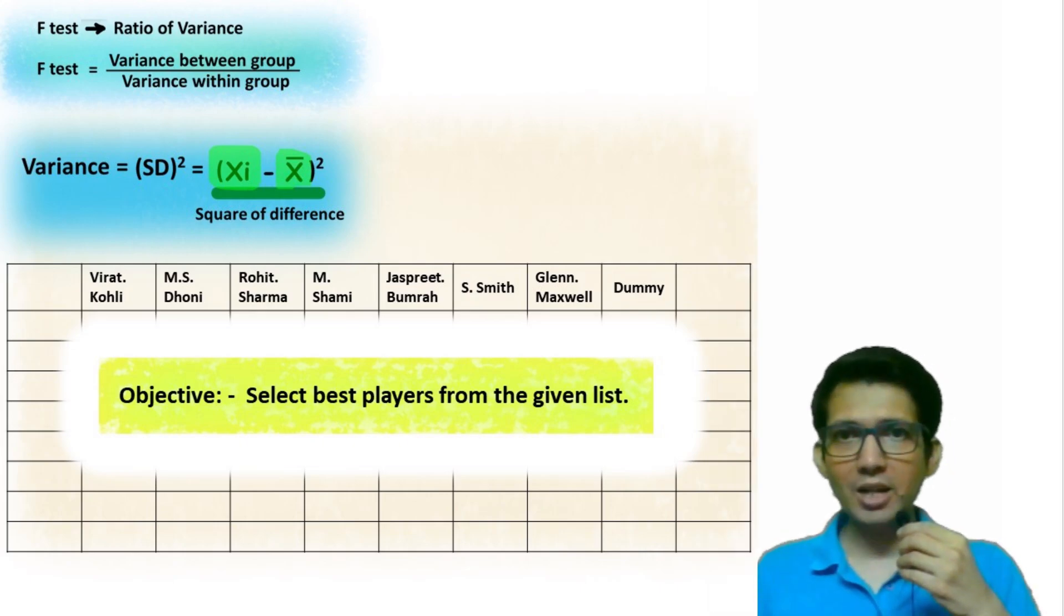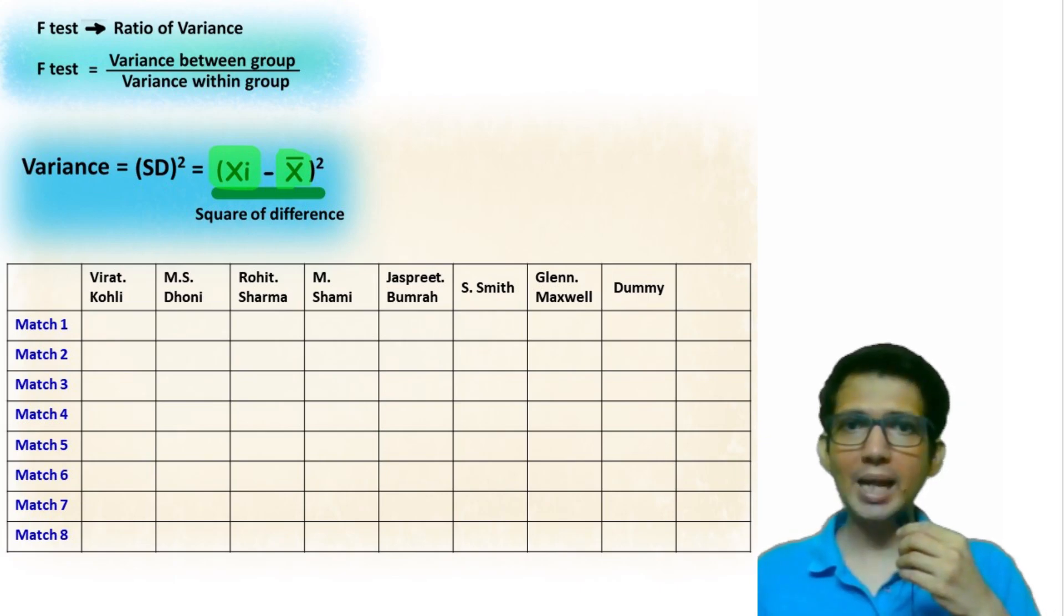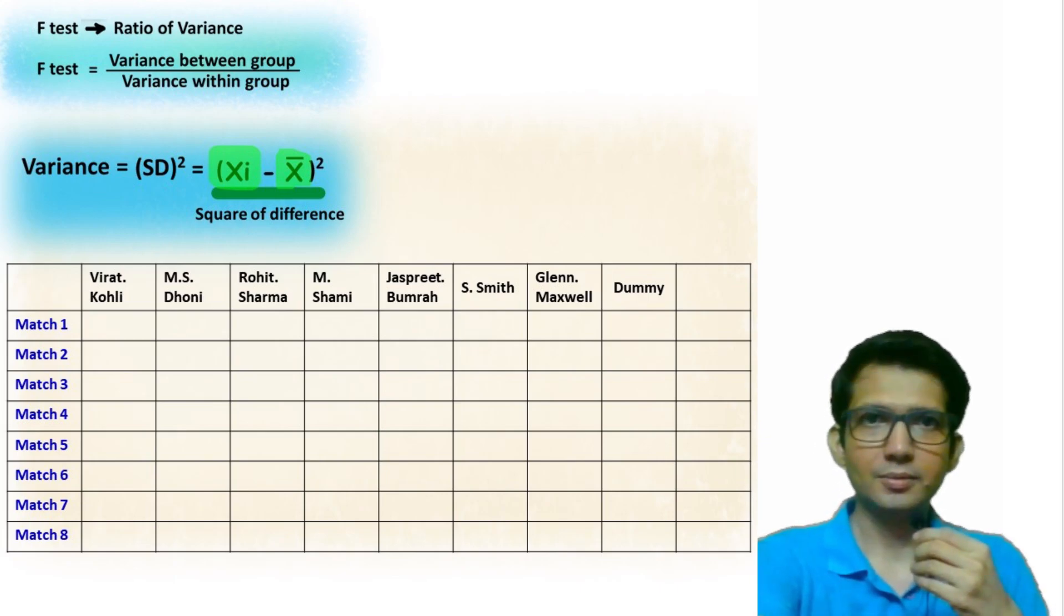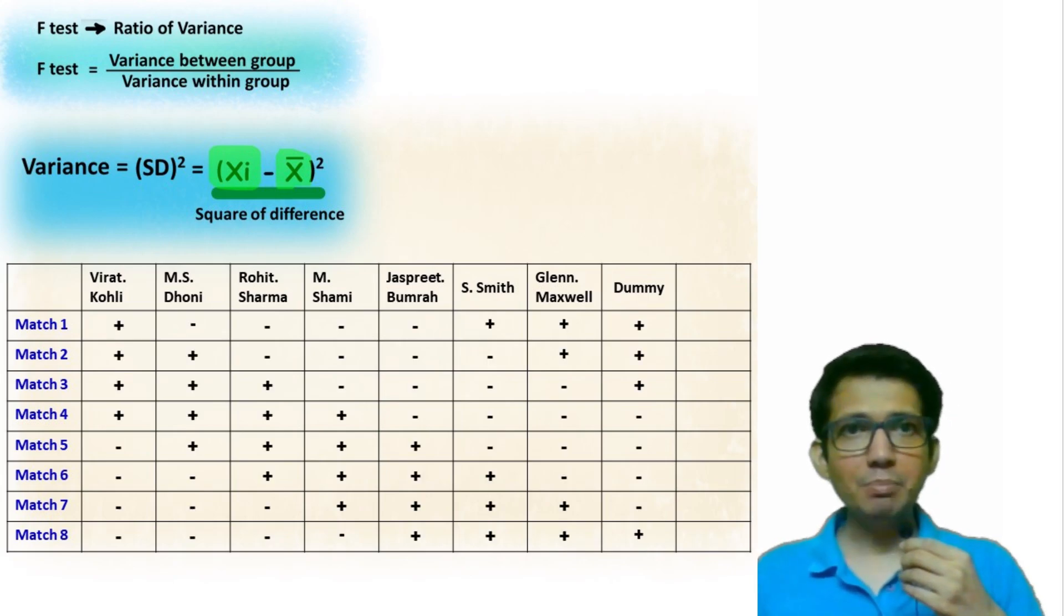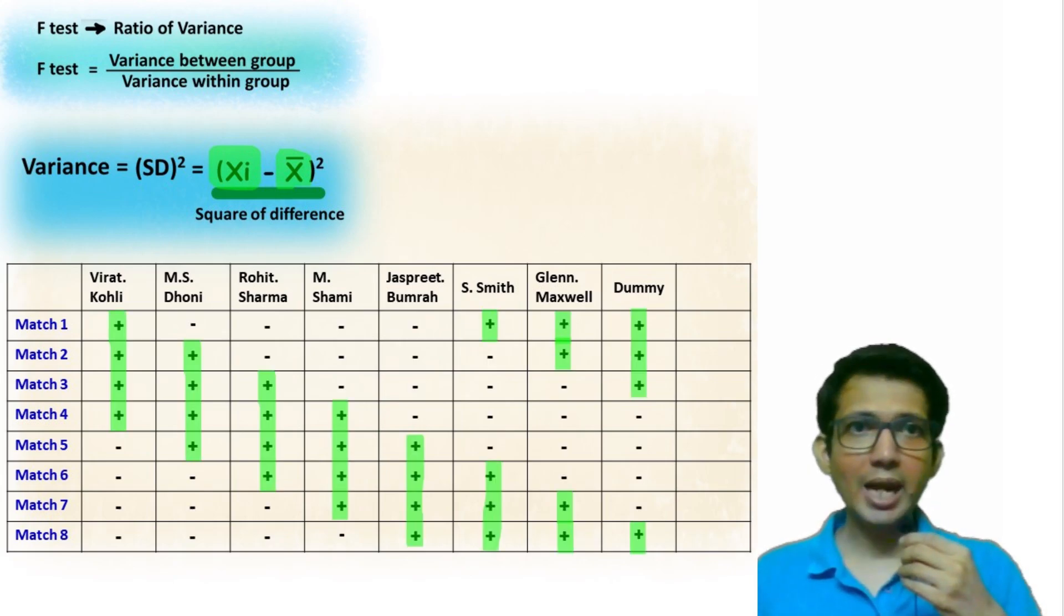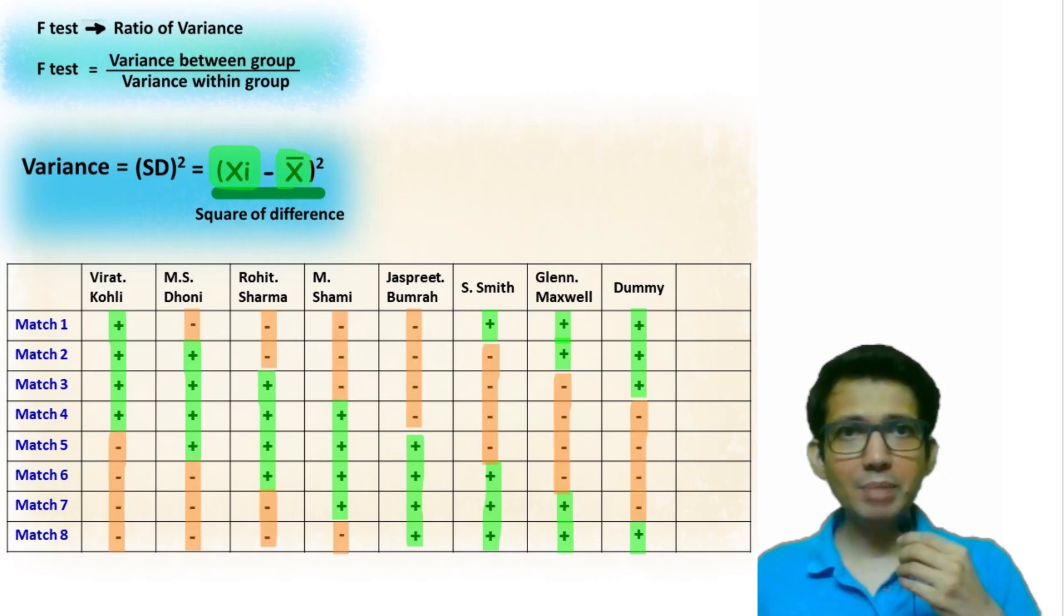These are the list of players and these are the matches they have played. This is our Placket Barman table using analogy of cricket. The plus sign means the player has played the game and the minus sign means the player was absent and did not play the game.